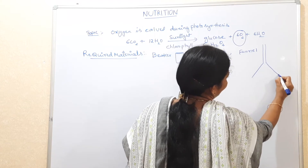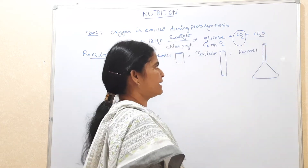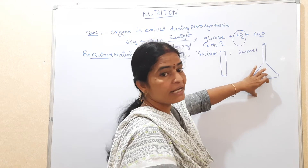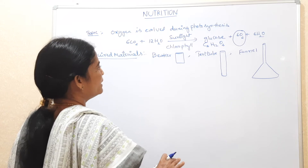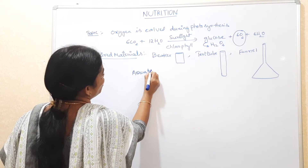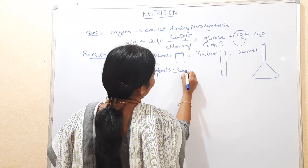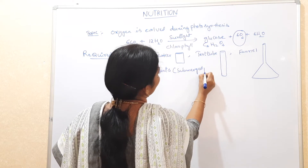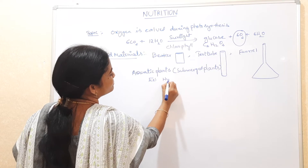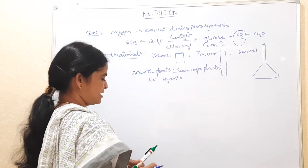A funnel has one side with a broad face and another side with a narrow stem-like structure. We also need aquatic plants — plants which will grow in water, called submerged plants. An example is hydrilla. We are taking hydrilla plant for this experiment.